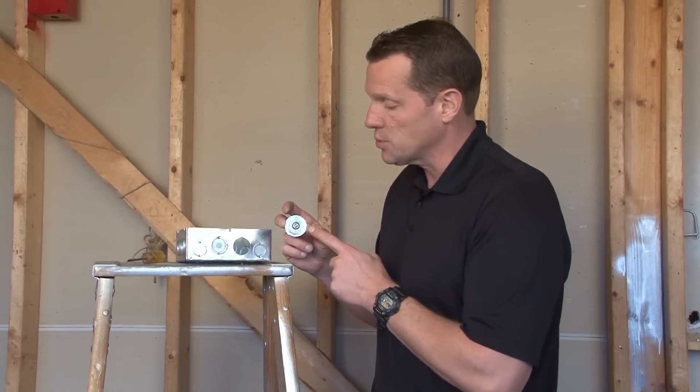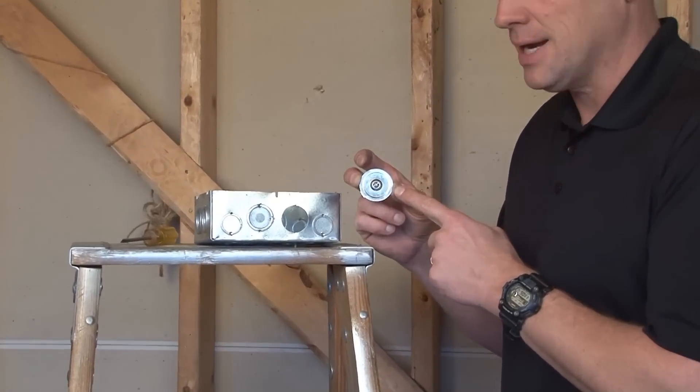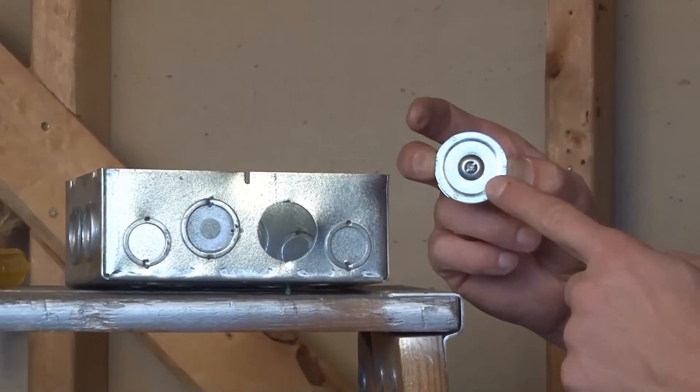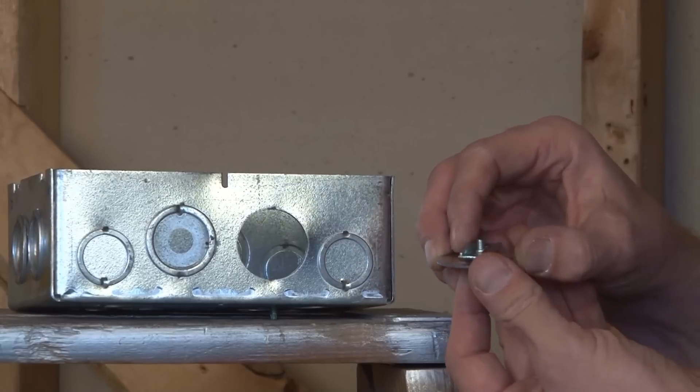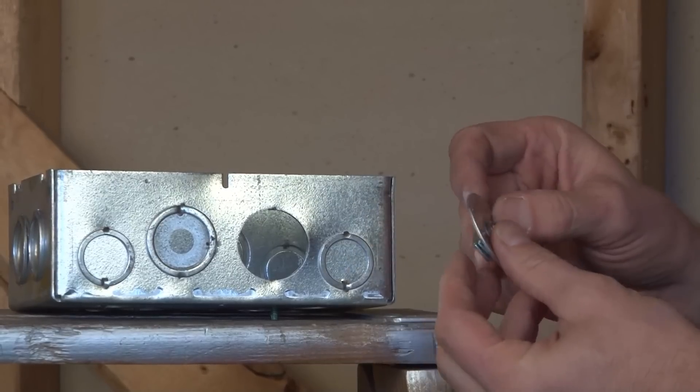Part number KOS100 is a one-inch steel knockout seal that comes complete with a center screw and a backer bar that catches on the inside of the box.